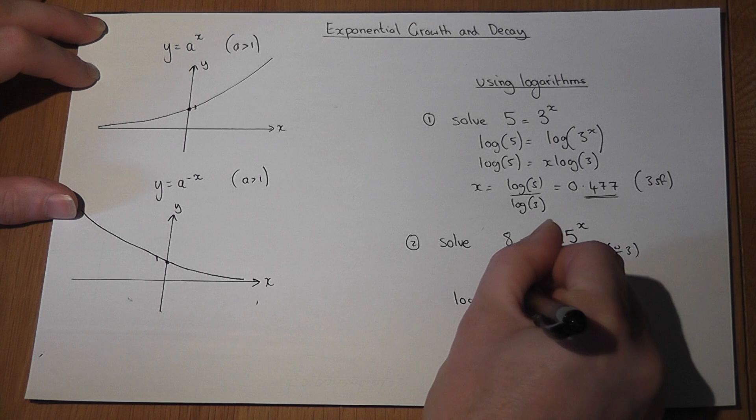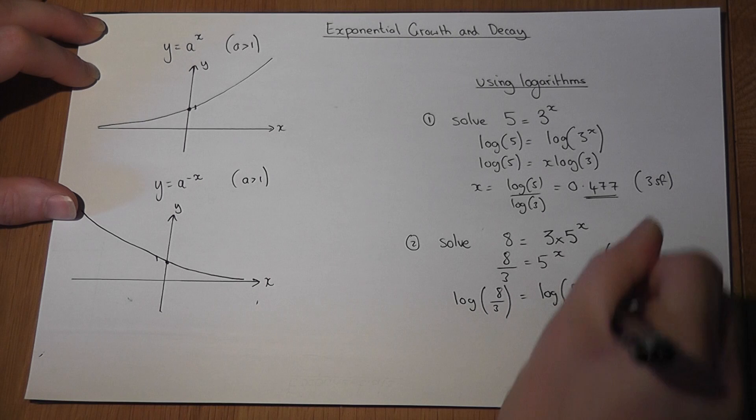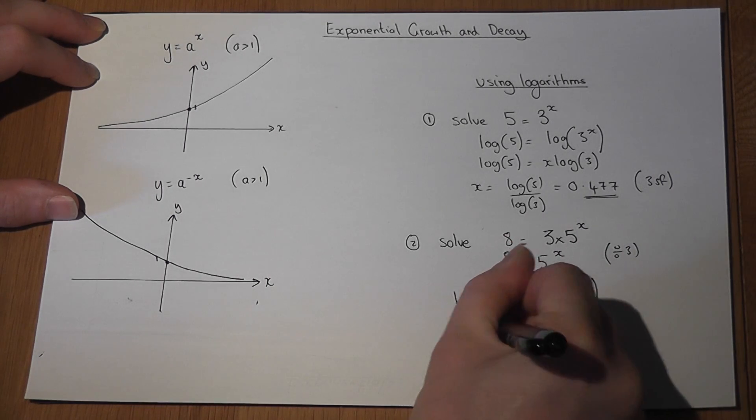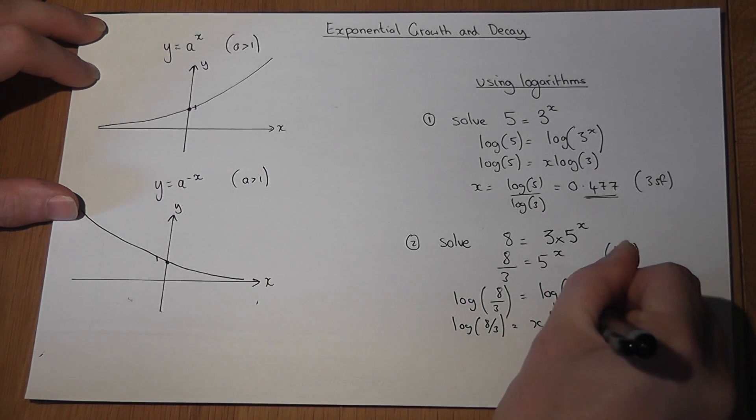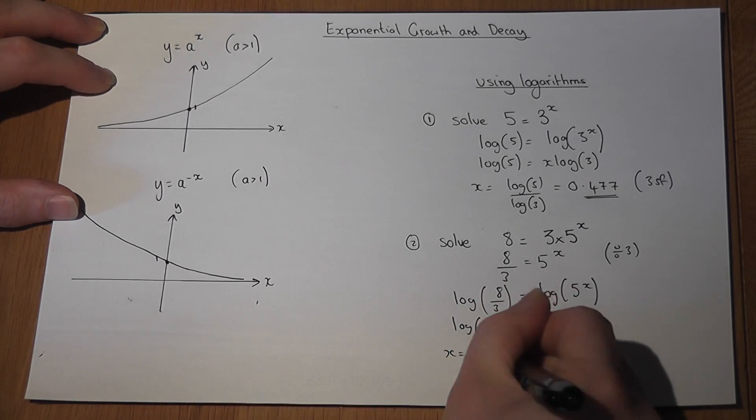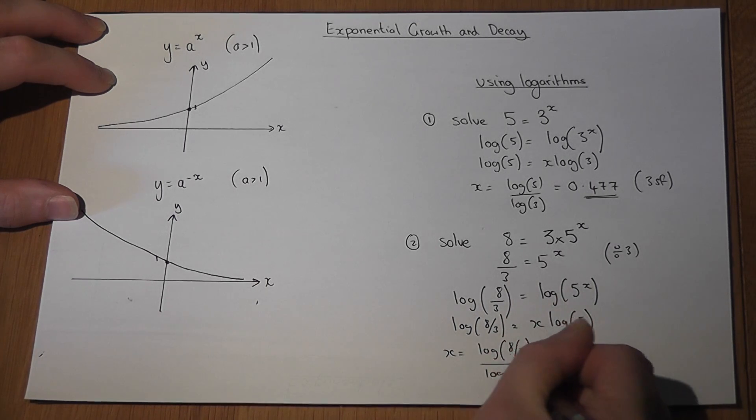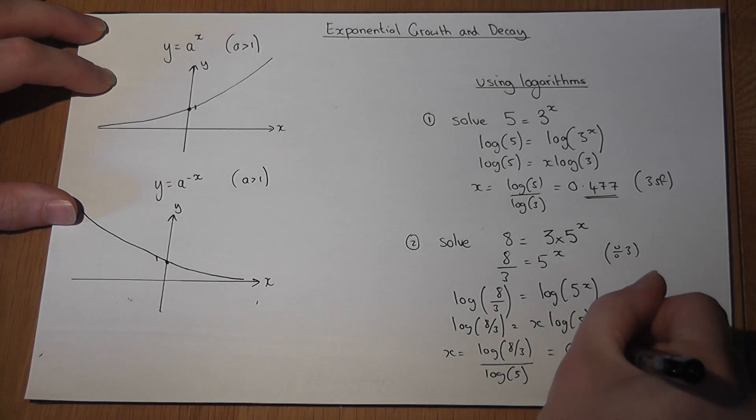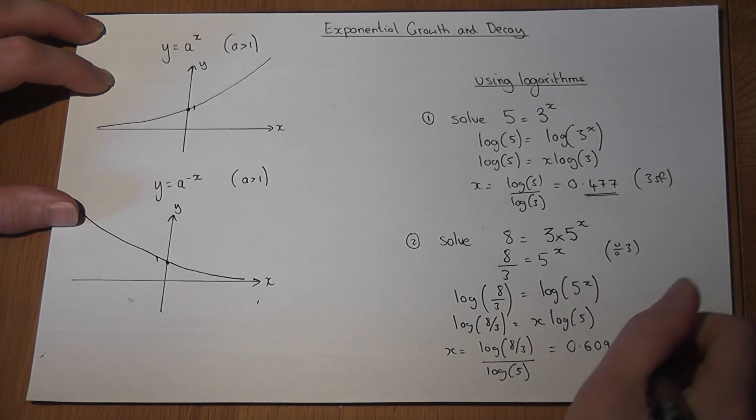So it's log of the entire fraction equals log of 5 to the power of x. So the x falls down, and then to get x, we divide by log 5. So x equals log of 8 thirds all over log of 5. We input that into our calculator, and get 0.609 to 3 significant figures.